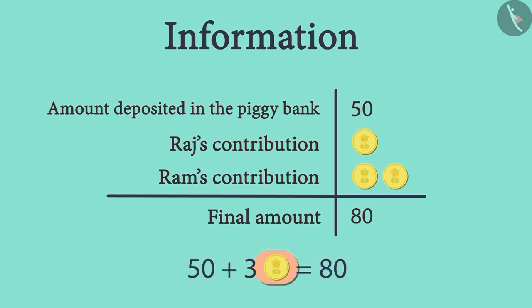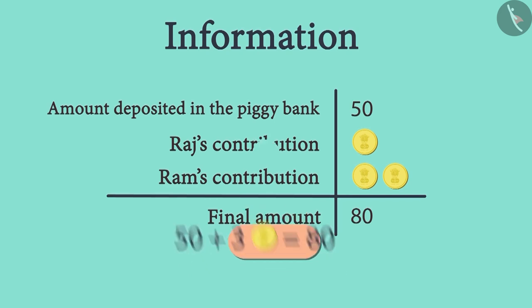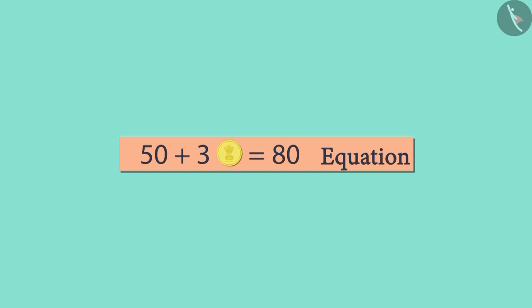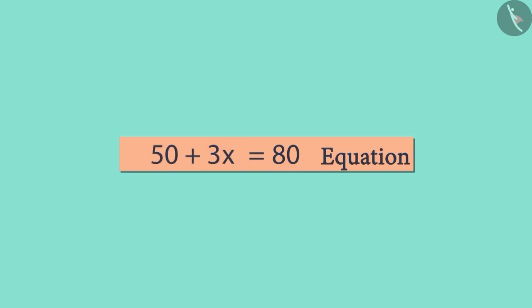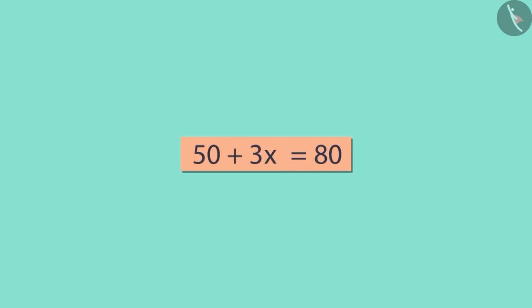Now we will only have to find the value of the coin. This form of writing information is called an equation. In any equation, we generally use letters of the English alphabet in place of variables such as a coin — this makes writing the equation easy. Let's replace the coin symbol with X. Our equation becomes: the total of 50 and 3 times X is equal to 80.